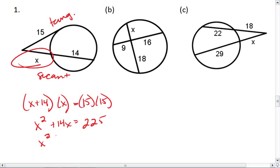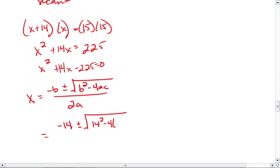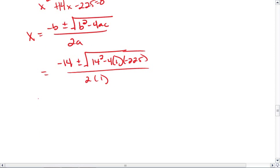I want to move the 225 over so that I now have a quadratic equation that's been set to 0. Using this, I want to use my quadratic equation. I find that x equals negative b plus or minus radical b squared minus 4ac all over 2a. So this equals negative 14 plus or minus square root of 14 squared minus 4 times 1 times negative 225 all over 2 times 1. And x will end up equaling, if we only use the positive, negative 7 plus root 274.